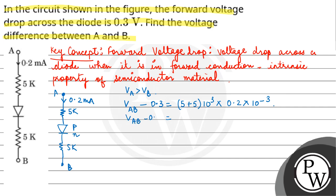So VAB minus 0.3 equals 10 times 0.2, which is 2. Therefore, VAB equals 2 plus 0.3.